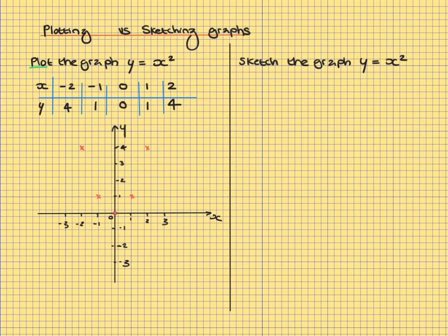We then draw a smooth curve through the points. We do not join the points up with a ruler point to point. It is a graph of y equals x squared. It is a smooth, u-shaped, symmetrical curve.